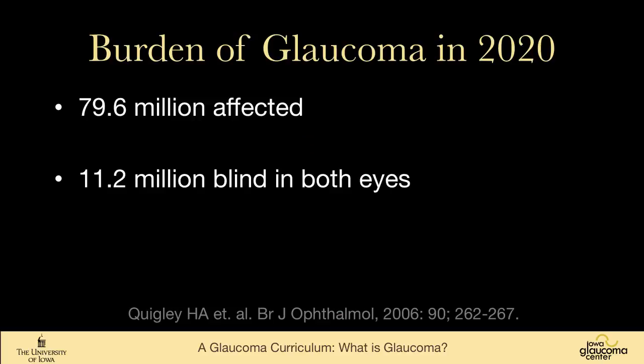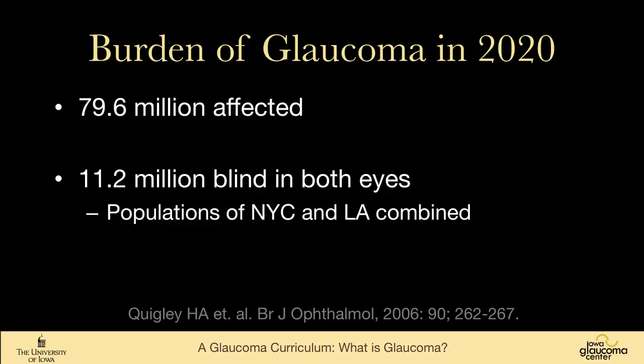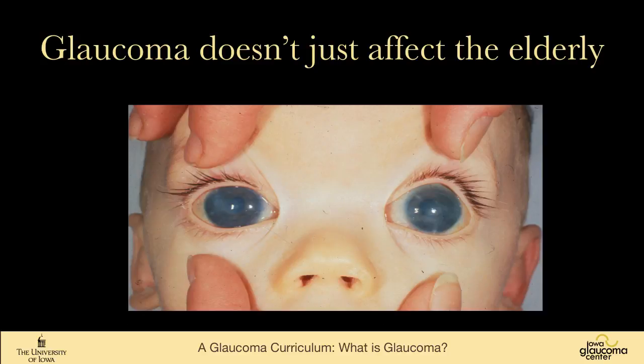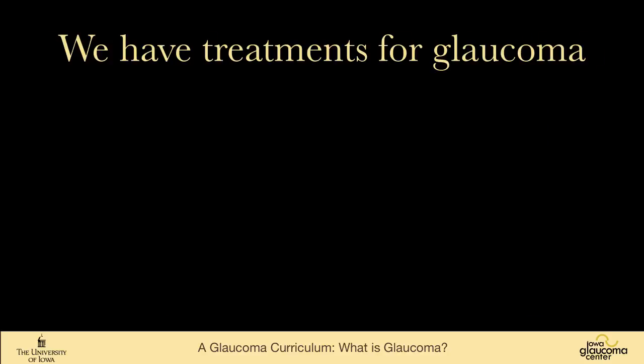Almost 80 million people will be affected by glaucoma in the year 2020, with 11 million blind in both eyes — equivalent to the combined populations of New York and Los Angeles. A startling statistic from Paul Foster's group found that 91% of bilateral blindness in China is from glaucoma, where angle closure glaucoma is a huge problem. It's also important to remember that glaucoma doesn't just affect the elderly — it affects babies and children as well.